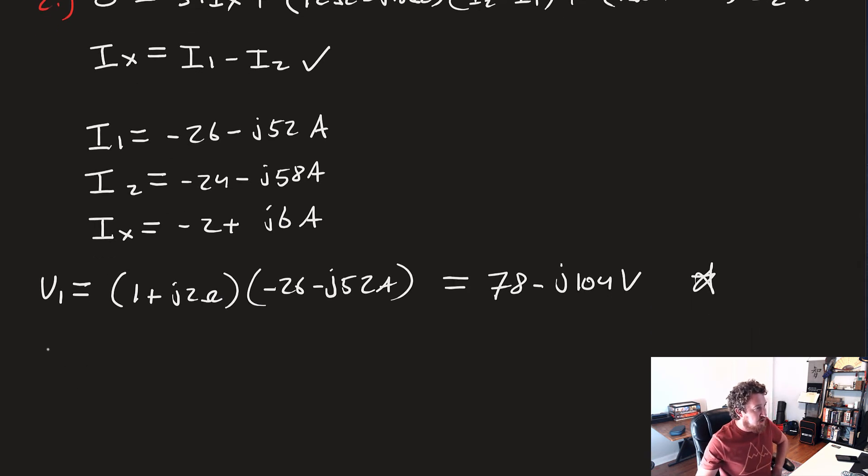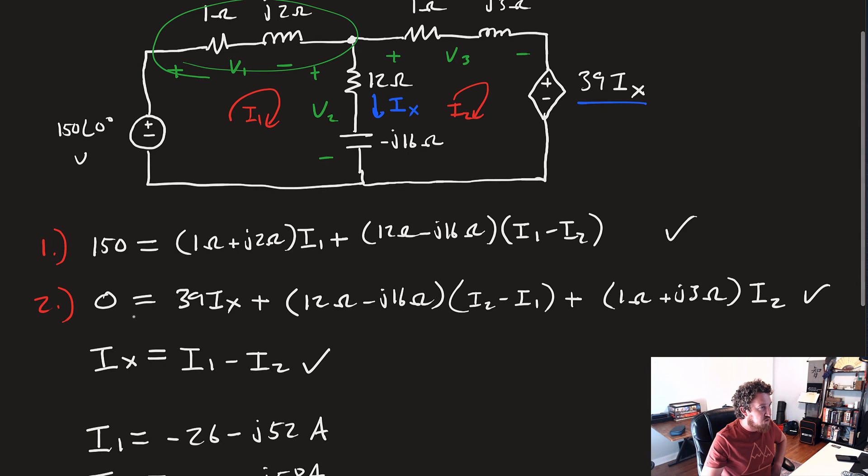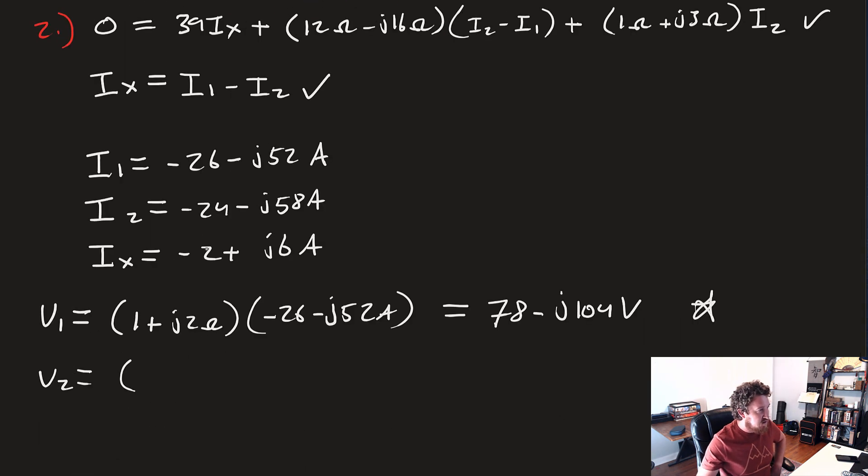V2. Remember, it was equal to, let's see, that middle impedance, that vertical one, 12 minus j16. So, this one is equal to, this one is times Ix, so I'm just going to say times minus 2 plus j6 amps. And that one comes out to be 72 plus j104 volts. So, there's our second solution.